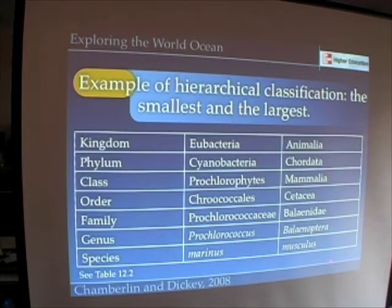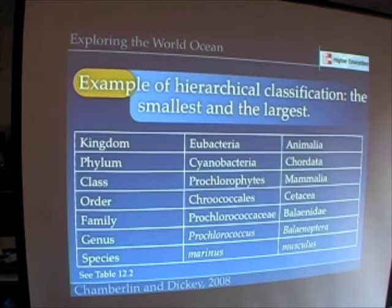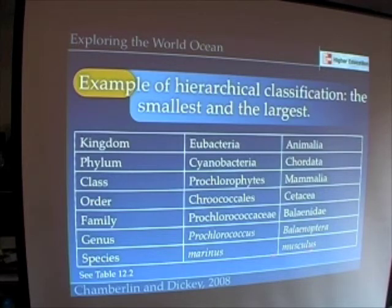On the other hand, the blue whale belongs to the kingdom Animalia, in the phylum Chordata, the class Mammalia — again, just like us — but its order is different. Its order is Cetacea, while our order is Primates. It belongs to the family Balaenopteridae, and its genus is Balaenoptera, and its species is Musculus.